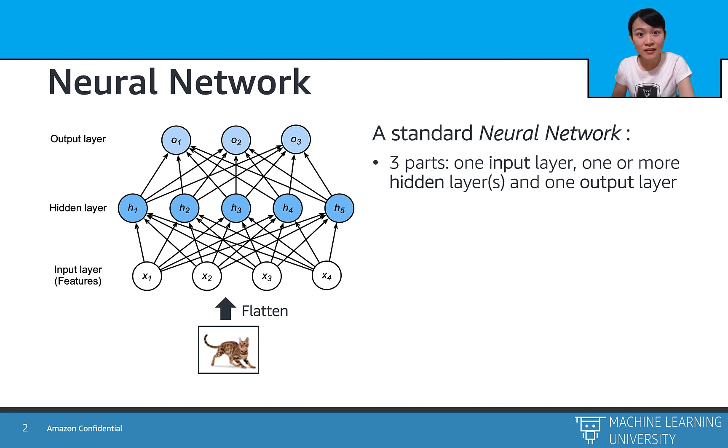And third, the output part, or the output layer, whose shape depends on the size of the feature output's dimension. For example, for a multi-class classification problem, we have three classes: cat, dog, or others. Hence, we have three neurons in the output layer.